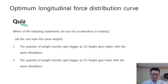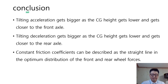Let's find the answer to the quiz. Which of the following statements are true? The answer is number one: the quantity of weight transfer gets bigger as Cg height gets higher with the same wheelbase. Here we have the conclusion. Tilting acceleration gets bigger as the Cg height gets lower and gets closer to the front axle. Tilting deceleration gets bigger as the Cg height gets lower and gets closer to the rear axle. Finally, constant friction coefficients can be described as straight lines in the optimum distribution of the front and rear wheel forces.